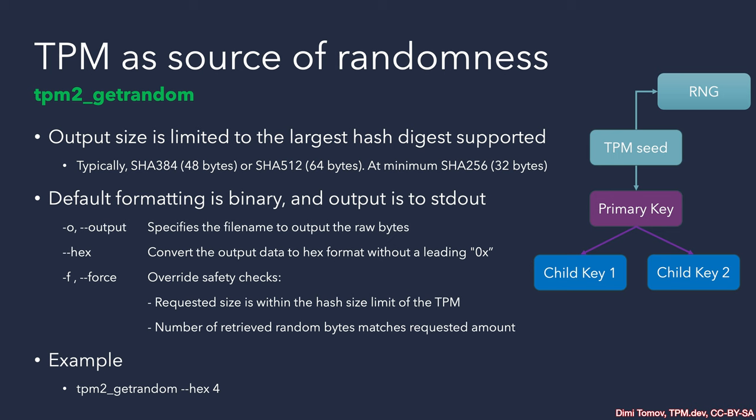The TPM seed for our endorsement hierarchy, endorsement keys, and other primary keys can also be used for random number generation. There is a TPM2 tool with the nice name TPM2_GetRandom that can provide almost unlimited amounts of random numbers.